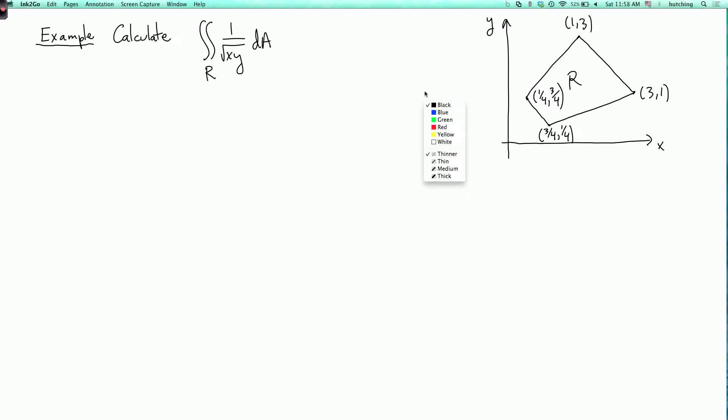We could also write the equations for the lines defining the boundary edges. So this line here is the line y equals x over 3. This line here is the line y equals 3x. And this line up here is the line x plus y equals 4. And this line here is the line x plus y equals 1.